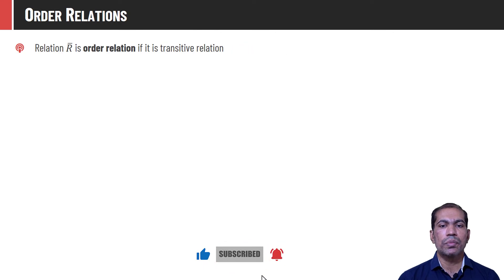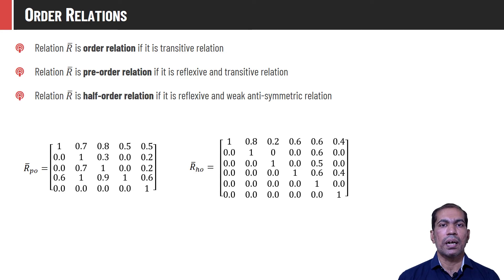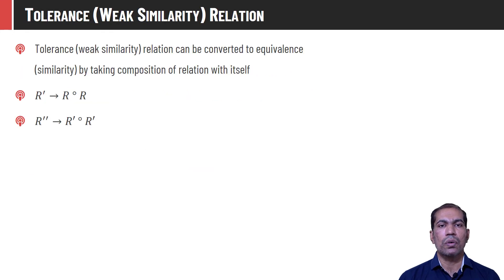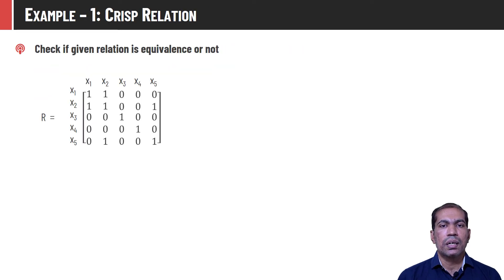R̄ is said to be an order relation if it is transitive. R̄ is said to be a pre-order relation if it is reflexive and transitive, and R̄ is said to be a half-order relation if it is reflexive as well as weak anti-symmetric. The relation matrices for pre-order and half-order relations are mentioned here. We can always convert a tolerance relation into an equivalence relation by taking the composition of the relation with itself, continuing until it becomes an equivalence relation.